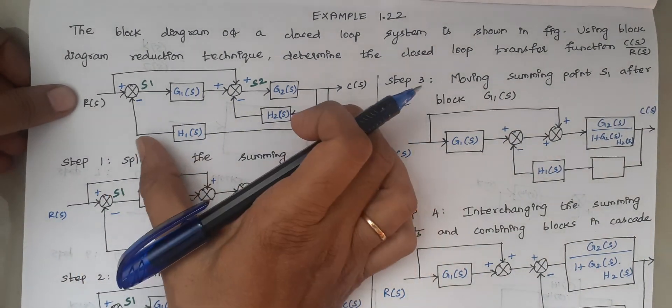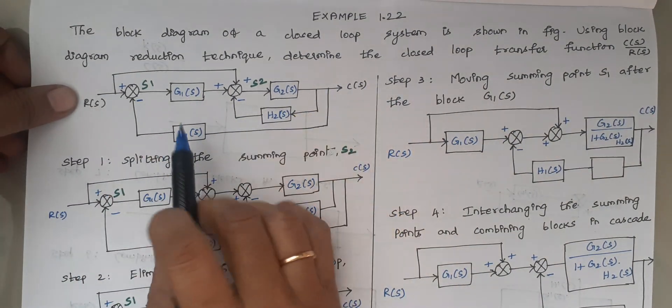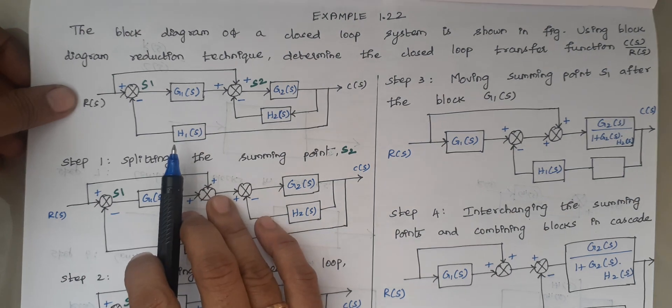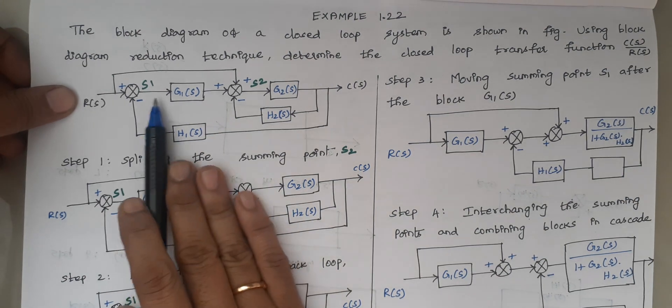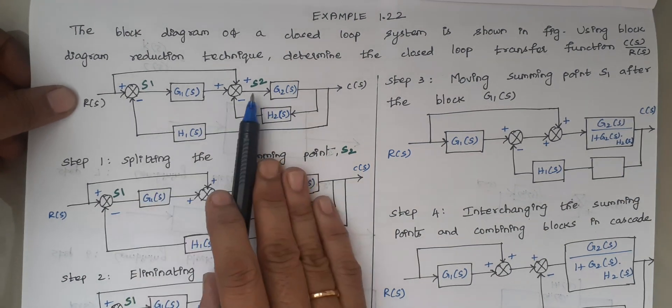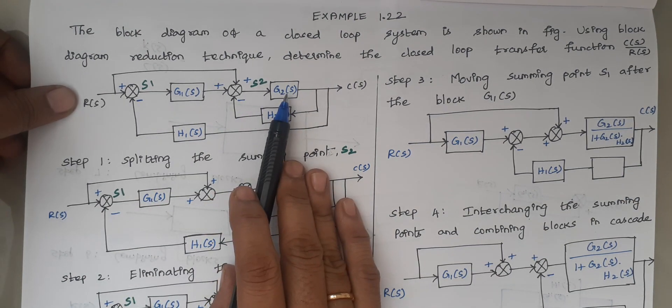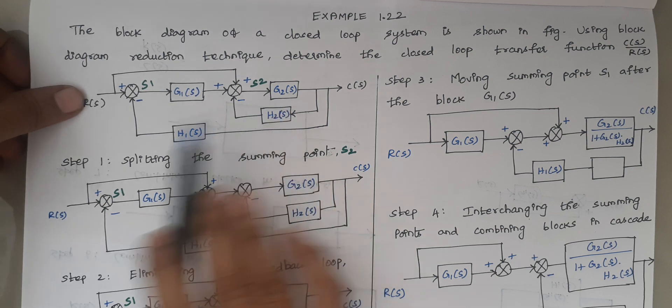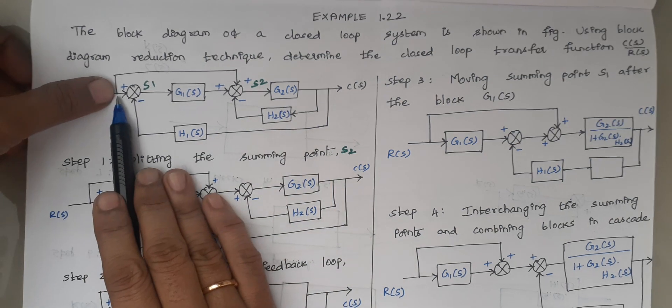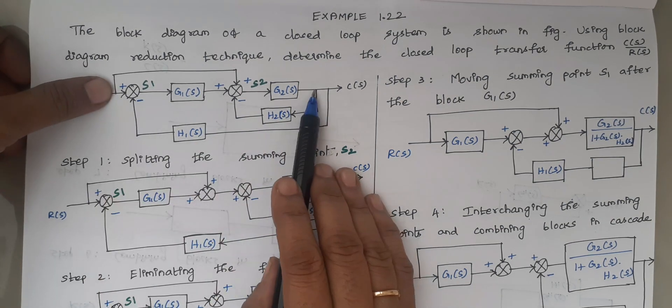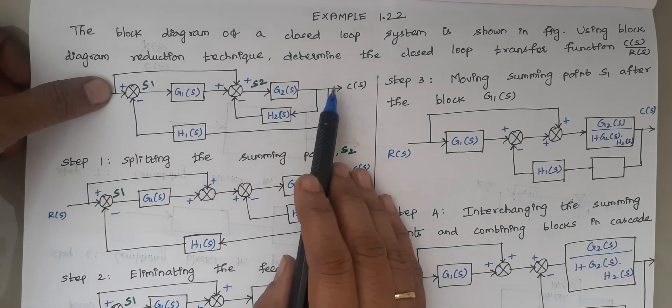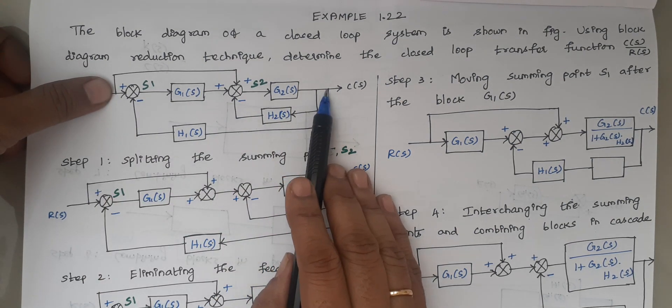This block diagram has two summing points — S1 and S2. And there are three branch points.